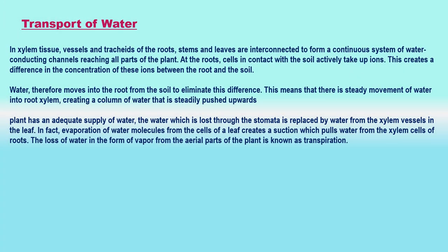Transport of water: Xylem tissue, vessels, and tracheids of the roots, stems, and leaves are interconnected to form a continuous system of water-conducting channels reaching all parts of the plant. At the roots, cells in contact with the soil actively take up ions, creating a difference in concentration between the root and the soil. Water therefore moves into the root from the soil to eliminate this difference, creating a steady movement of water into root xylem, forming a column of water that is steadily pushed upwards. The water lost through the stomata is replaced by water from the xylem vessels in the leaf. Evaporation of water molecules from the cells of a leaf creates a suction which pulls water from the xylem cells of roots. The loss of water in the form of vapor from the aerial parts of the plant is known as transpiration.